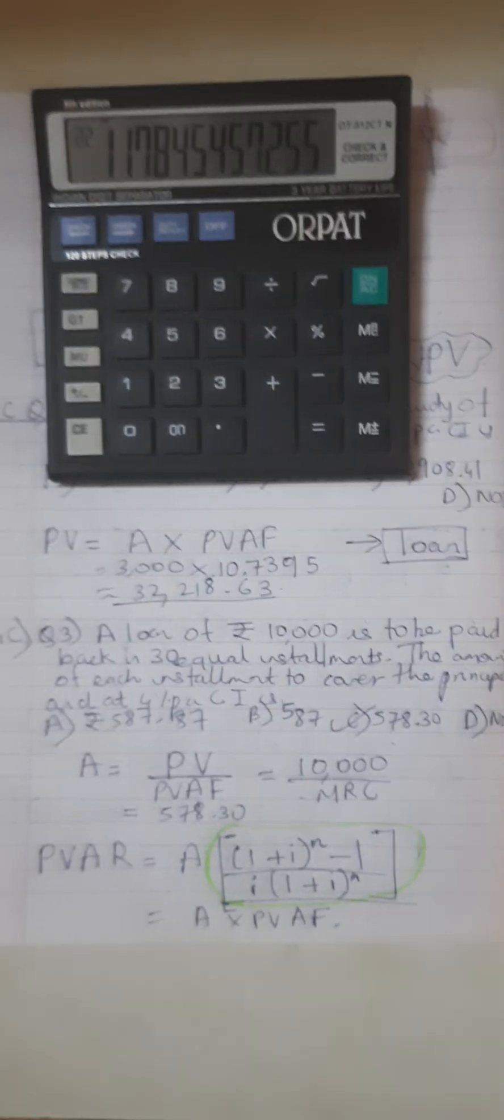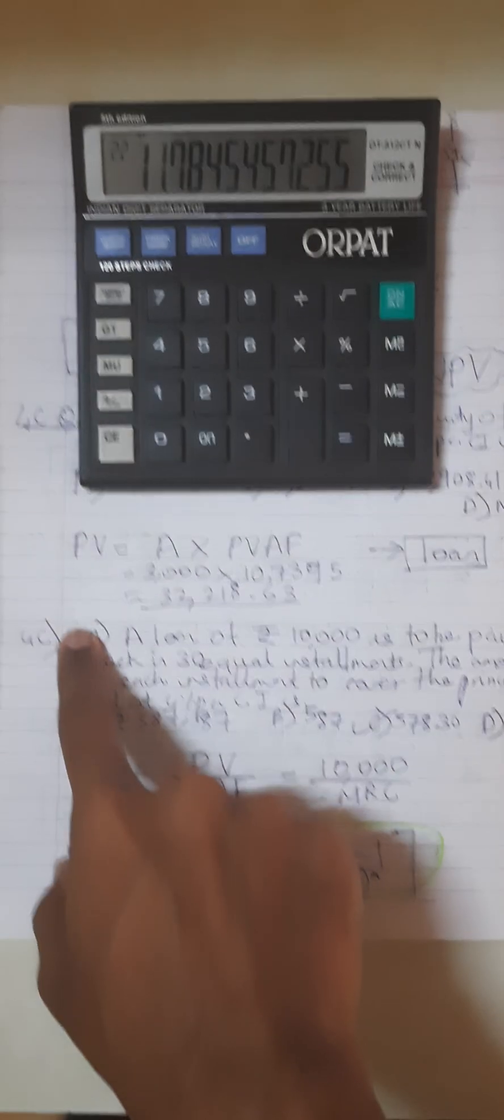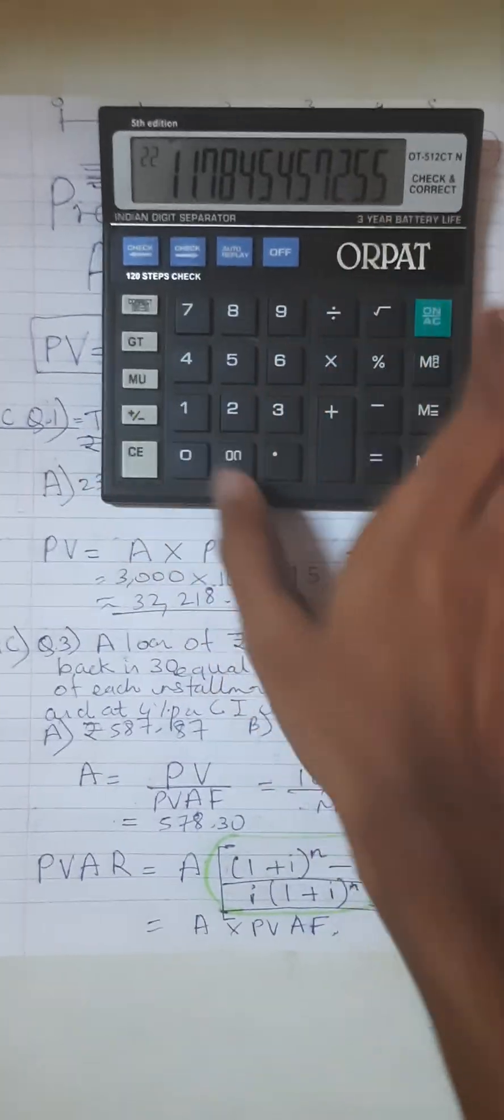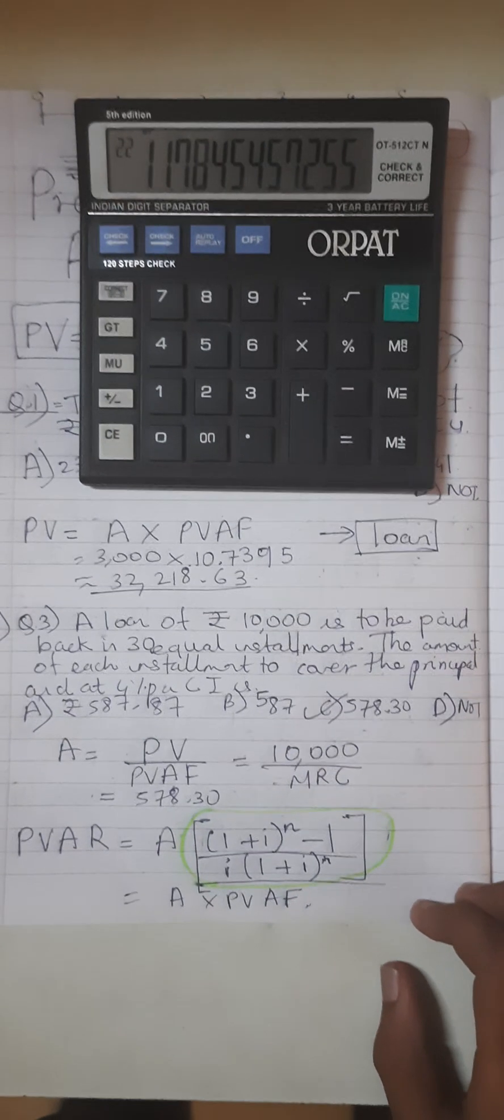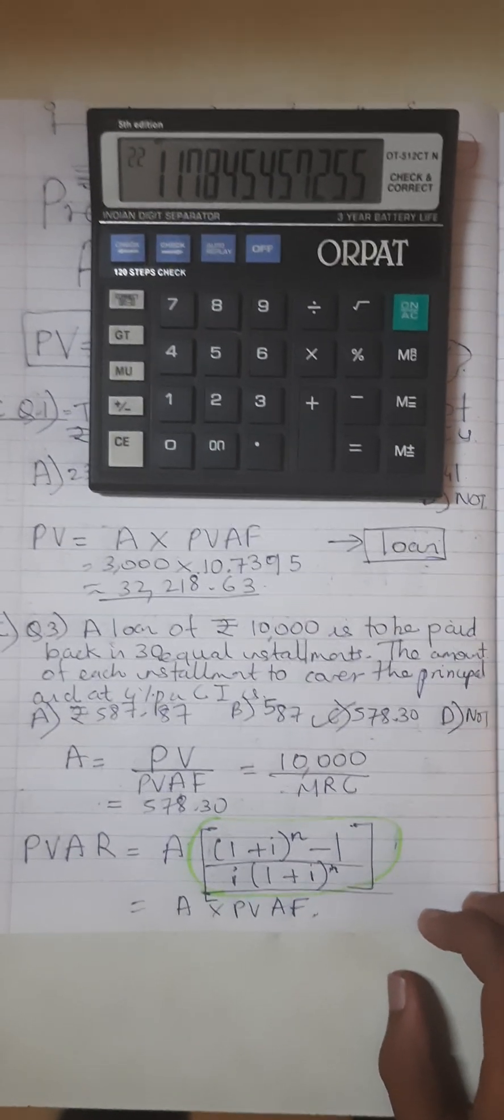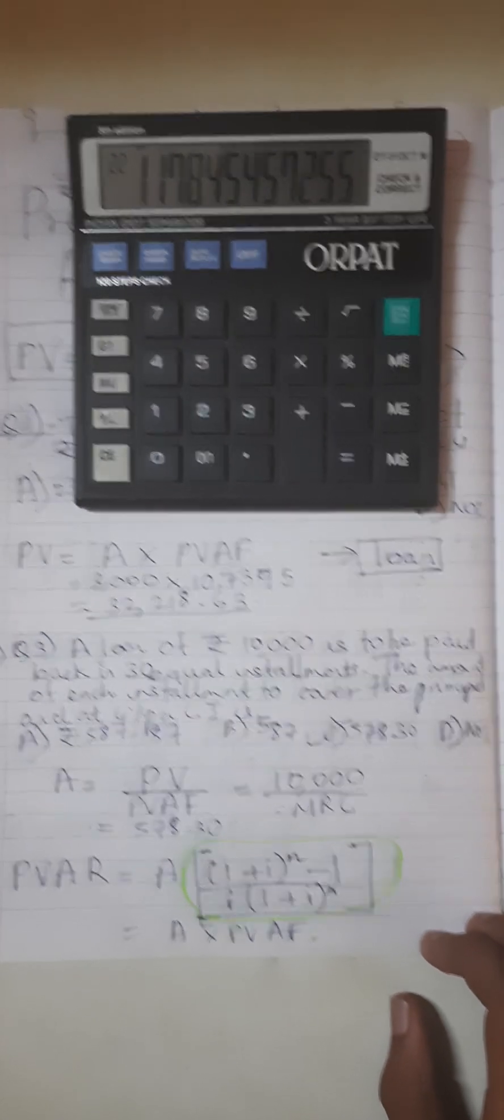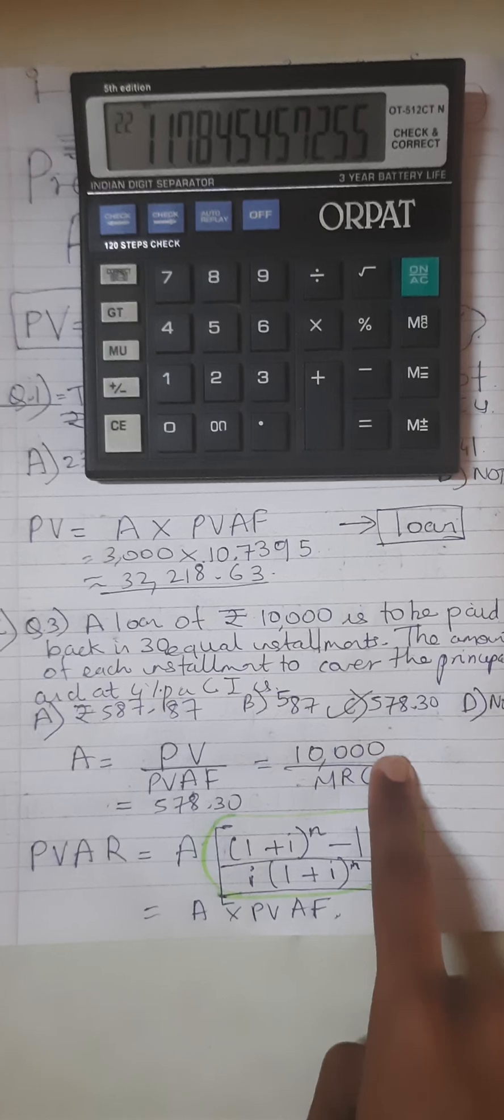Now let's move on to the second question. This is question 4C number 3, and the earlier one was 4C number 1. A loan of rupees 10,000 is to be paid in 30 equal installments. The amount of each installment covers the principal and 4% compound interest per annum. The present value is nothing but the loan amount of rupees 10,000, and the installments are nothing but the annuity.